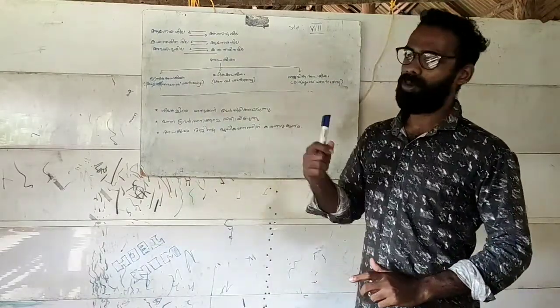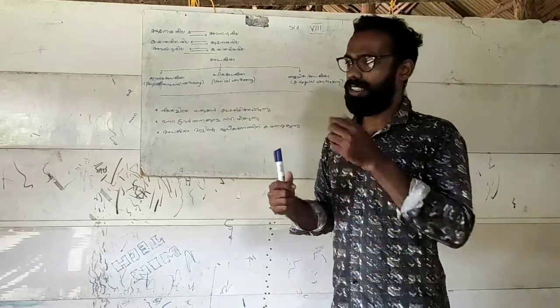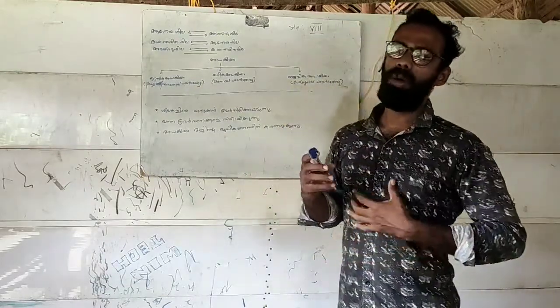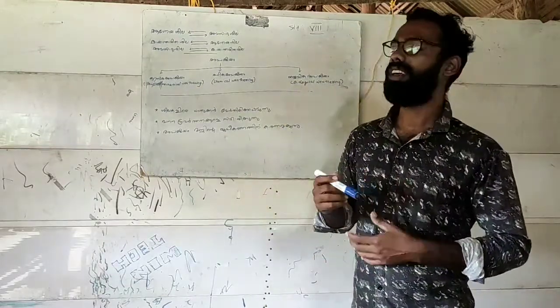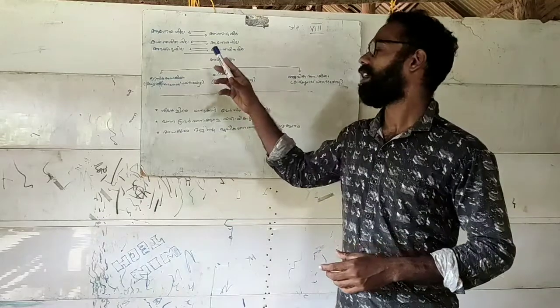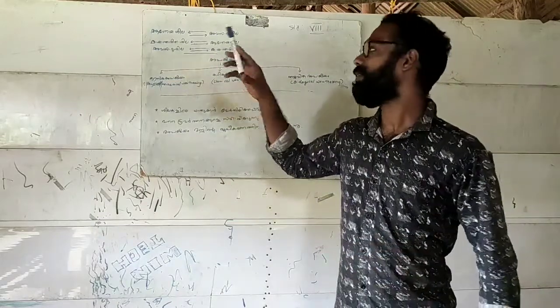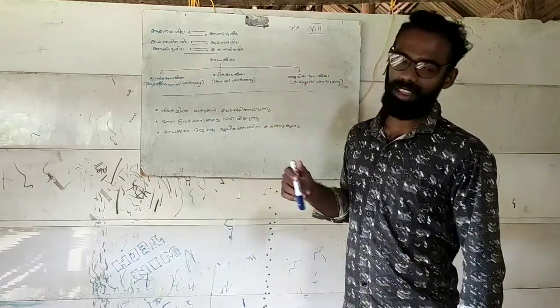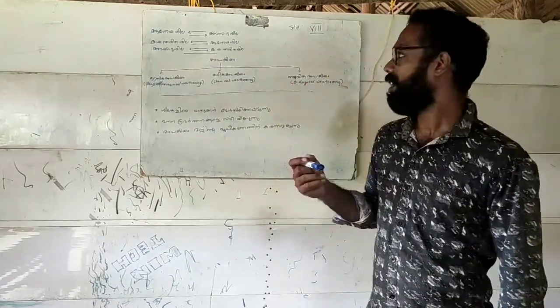If you have three different shapes, you can see how many different shapes. This is the division. This is what we say.